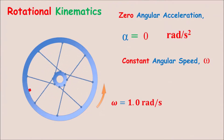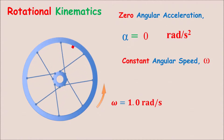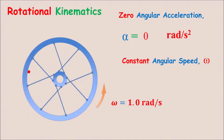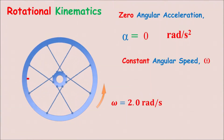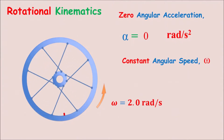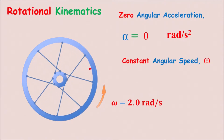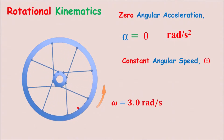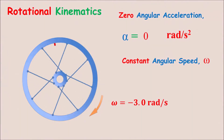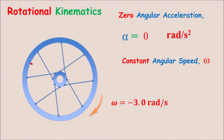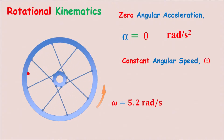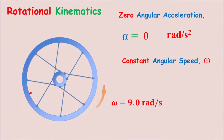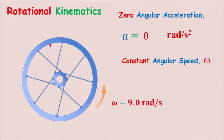This wheel is rotating with an angular speed of 1 radian per second. Since one revolution is 2π radians, this wheel takes about 6 seconds to complete one round. Now it's going faster at 2 radians per second — counterclockwise, so its angular velocity is positive 2 rad/s. Now even faster at positive 3 rad/s. Now at negative 3 rad/s because it's rotating clockwise. Now at 5.2 rad/s, now at negative 6 rad/s, now at positive 9 rad/s, and so on.